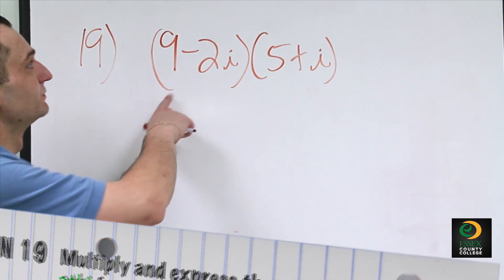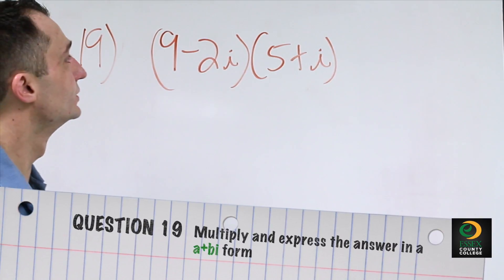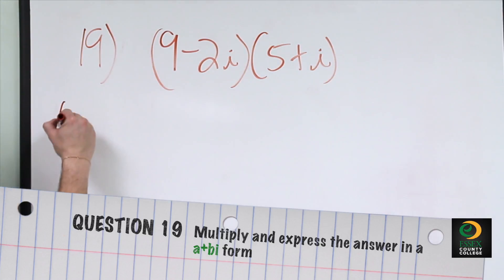Problem number 19 asks us to multiply the following expression. We're going to use FOIL: first, outer, inner, and last.